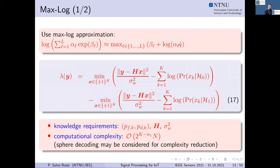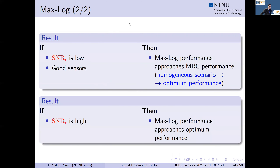The max-log rule is built using the max-log approximation popular in communication theory to simplify the optimum log-likelihood rule, yielding equation 17. It has similar knowledge requirements to the optimum rule but slightly less computational complexity — still exponential with the number of sensors but with reductions depending on the decoding scheme used, for instance using sphere decoding. The result is that at low SNR with good sensors in the homogeneous scenario, max-log approaches maximum ratio combining performance, which equals the optimum rule.